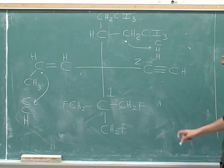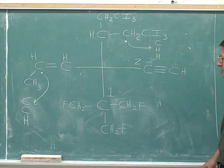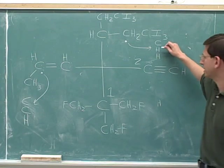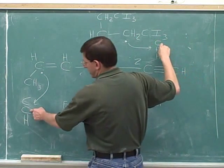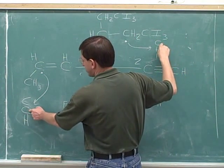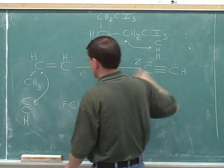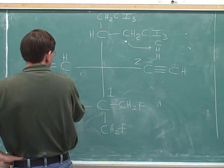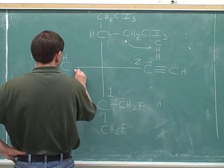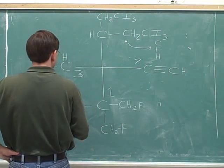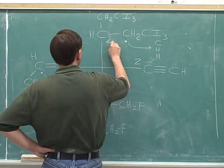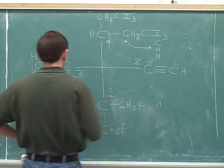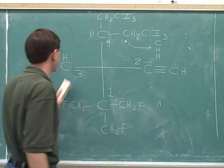The first point of difference is at the second atom in the list. The second atom in this list is a hydrogen and the second atom in the other list is a carbon. Carbon beats hydrogen. So the group on the left has the number three priority, and the group on top has the number four priority.